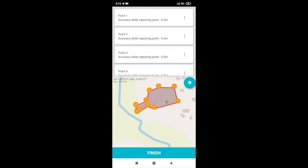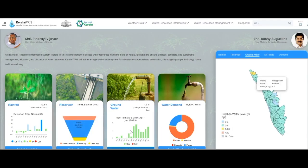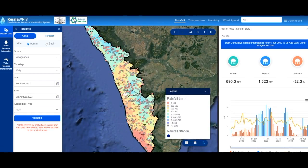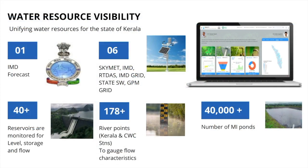Kerala Water Resources serves as a centralized platform for all information related to the water sector. Currently, the system integrates data from the following sources: weather forecast from the Indian Meteorological Department, observed rainfall data from six different sources, level storage and release details of more than 40 reservoirs, and water level information and trend inflows recorded by more than 170 river gauges installed at various control locations.